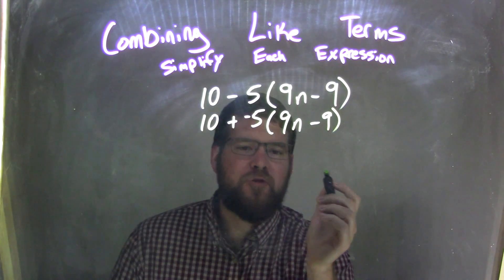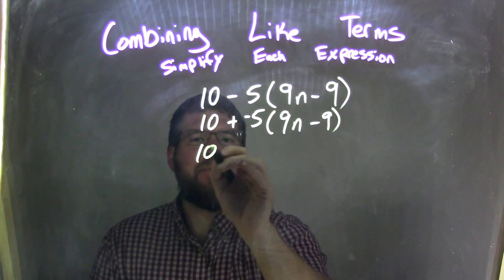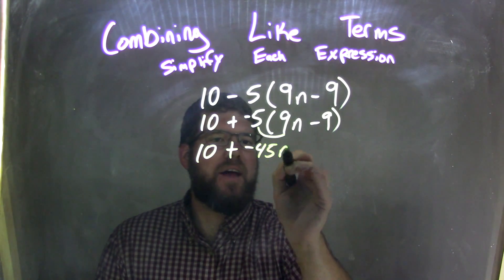So now I'm going to distribute, okay? I'm going to distribute that negative 5 multiplication out, so bring a 10 down, plus negative 5 times 9n is negative 45n.